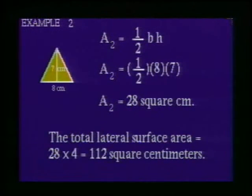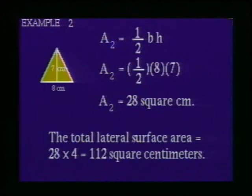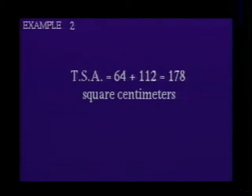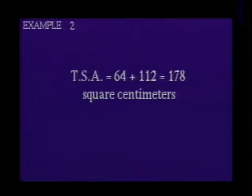The lateral faces of a pyramid are 4 congruent isosceles triangles. To find the area of one triangle, we multiply ½ times the product of the base and the height. Substituting 8 for the length of the base and 7 for the height, we find the area of each triangle is 28 square centimeters. Since there are 4 congruent triangles, we multiply 28 by 4 to obtain the lateral area of 112 square centimeters. Therefore, the total surface area of the square pyramid is 64 + 112 = 178 square centimeters.